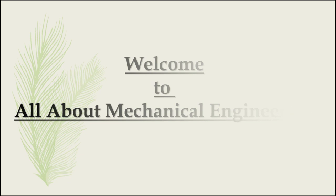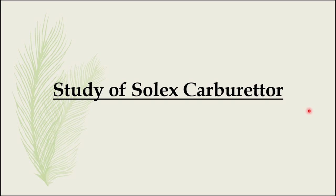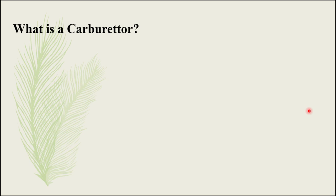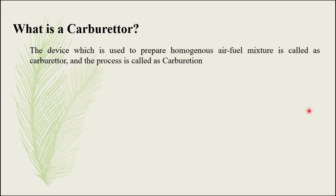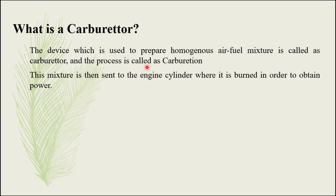Hi, welcome to All About Mechanical Engineering. In today's video we will discuss what is a carburetor, various forms of carburetor, and we will study the Solex carburetor. The device which is used to prepare a homogeneous air-fuel mixture is called a carburetor, and the process is called carburation. This mixture which is prepared is then sent to the engine cylinder where it is burned in order to obtain power.